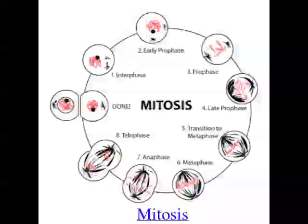The next stage is called anaphase. This is when the chromosomes split into two parts — each chromosome is made up of two identical chromatids, and each chromatid splits apart and then moves to each pole of the cell.